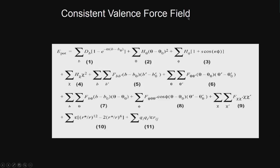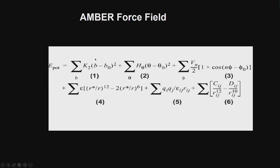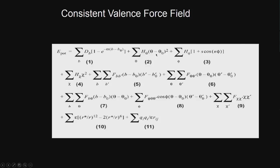CVFF (consistent valent force field) uses a Morse term for bond stretching rather than a simple harmonic term, and uses similar equations for angle bending and torsion. Notably, it includes many cross terms such as stretch-angle, angle-stretch, and so on, which require extra parameters.